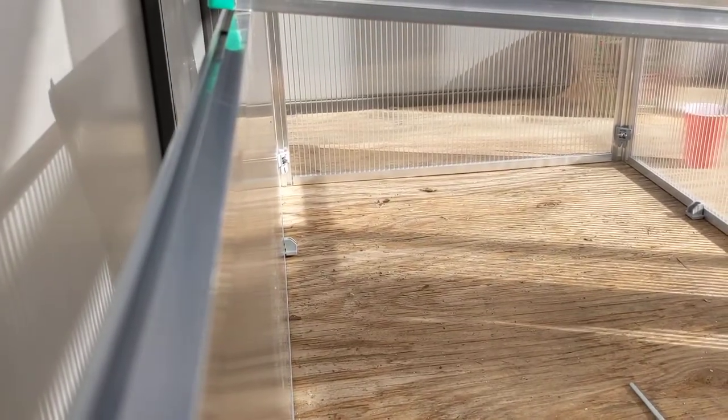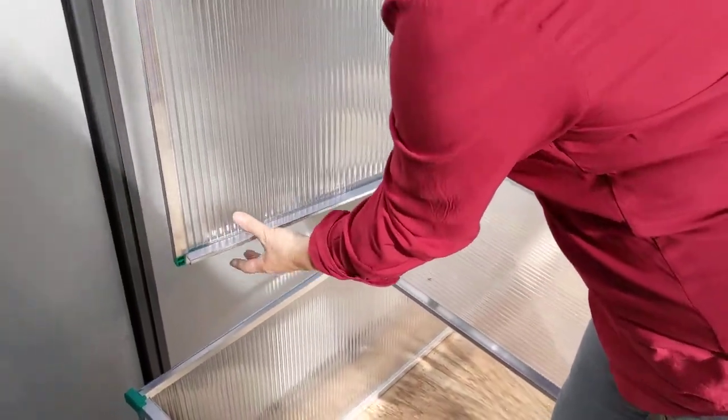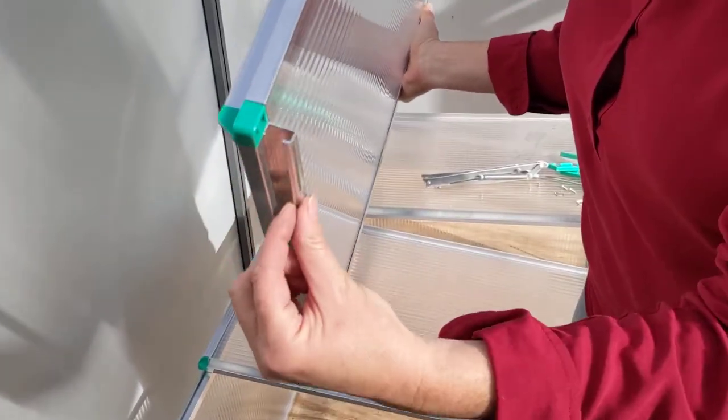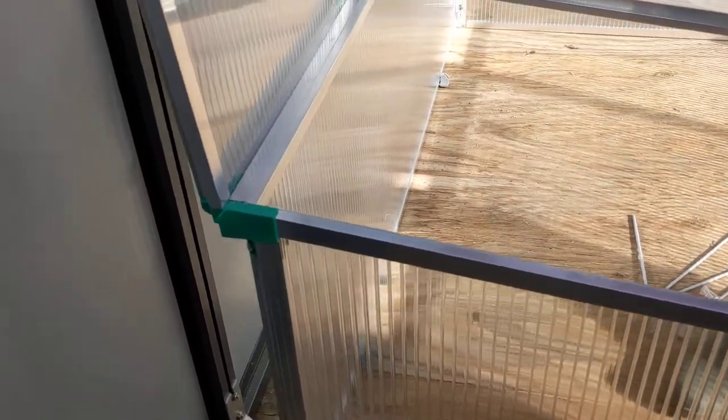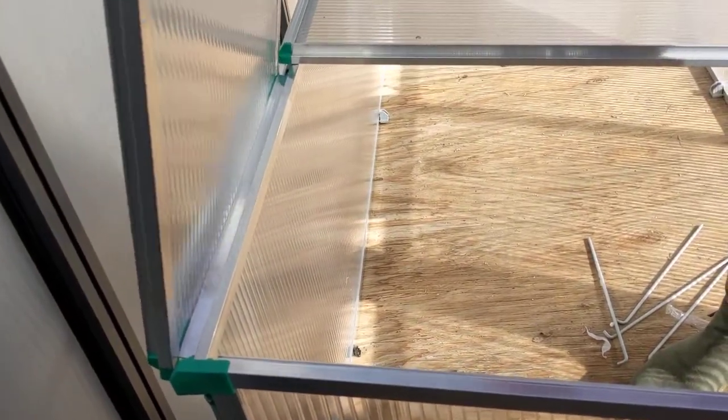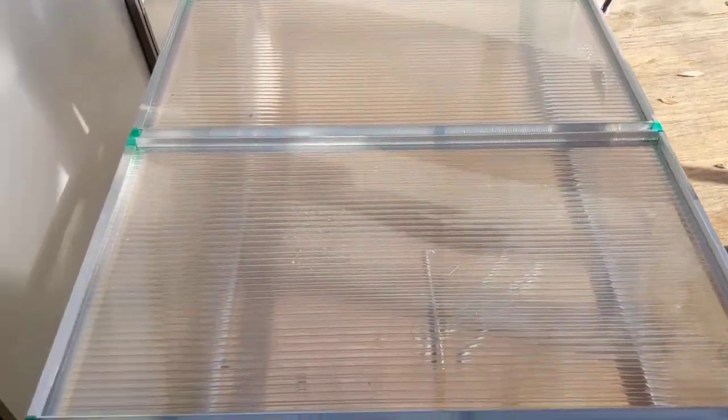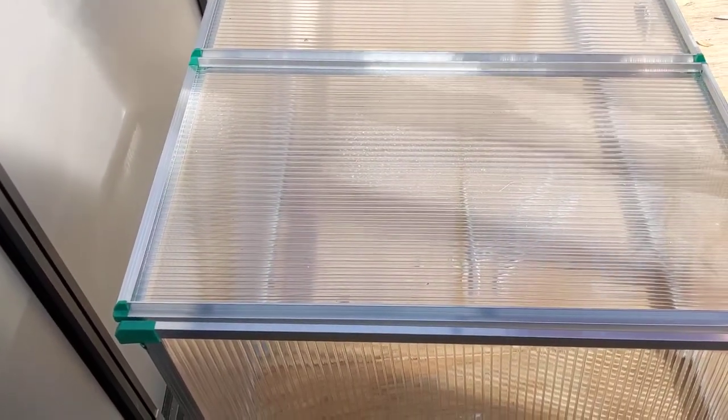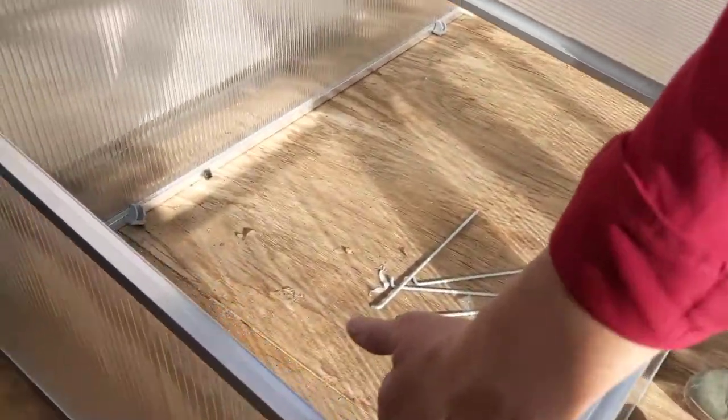Now this is especially important because that is what creates your hinge or your door. This little hook of this extrusion inserts into that lip and comes down to create your hinge. And that's how it hinges. That's why it's important on the front and back the lip goes to the outside and the sides the lip goes on the inside.